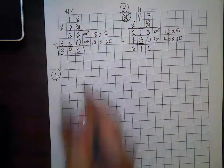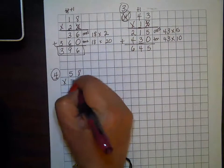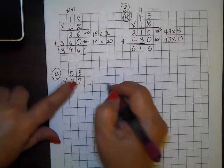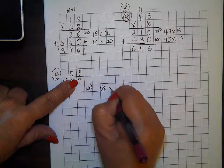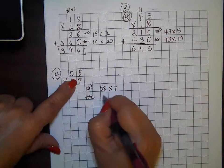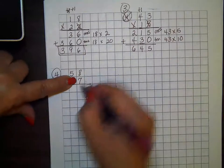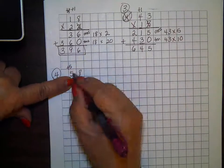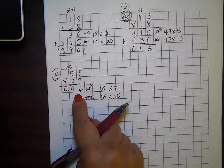Now I'm going to multiply 58 times 37. Starting in my ones — this is the same idea as the distributive property: ones here is 58 times 7, and tens is 58 times 30. I'll cover the 3 up. Seven times 8 is 56, I regroup; 7 times 5 is 35, plus 5 is 40 — and I have 406.